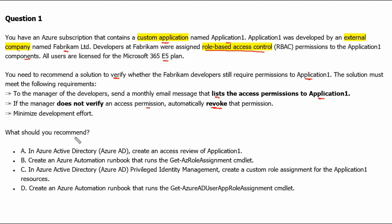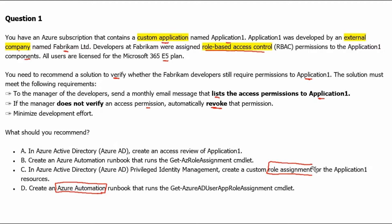What should you recommend? Option D: Create an Azure Automation Runbook. Option C: Azure Active Directory Privileged Identity Management — create a custom role assignment. Option B: Create an Azure Automation Runbook.